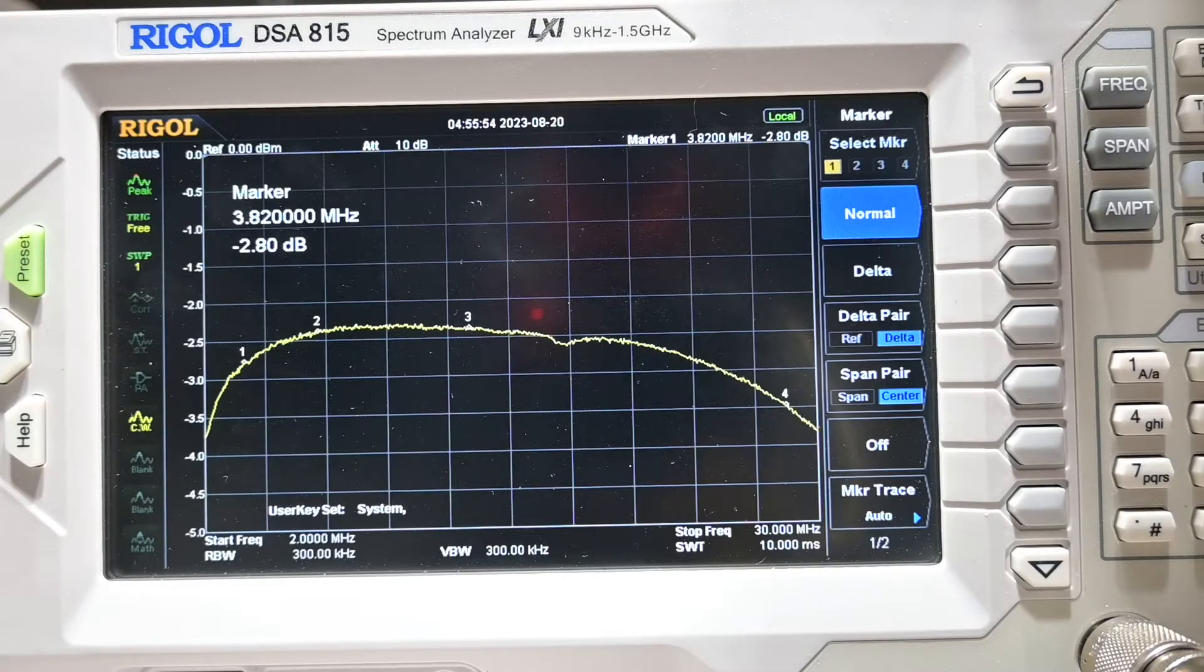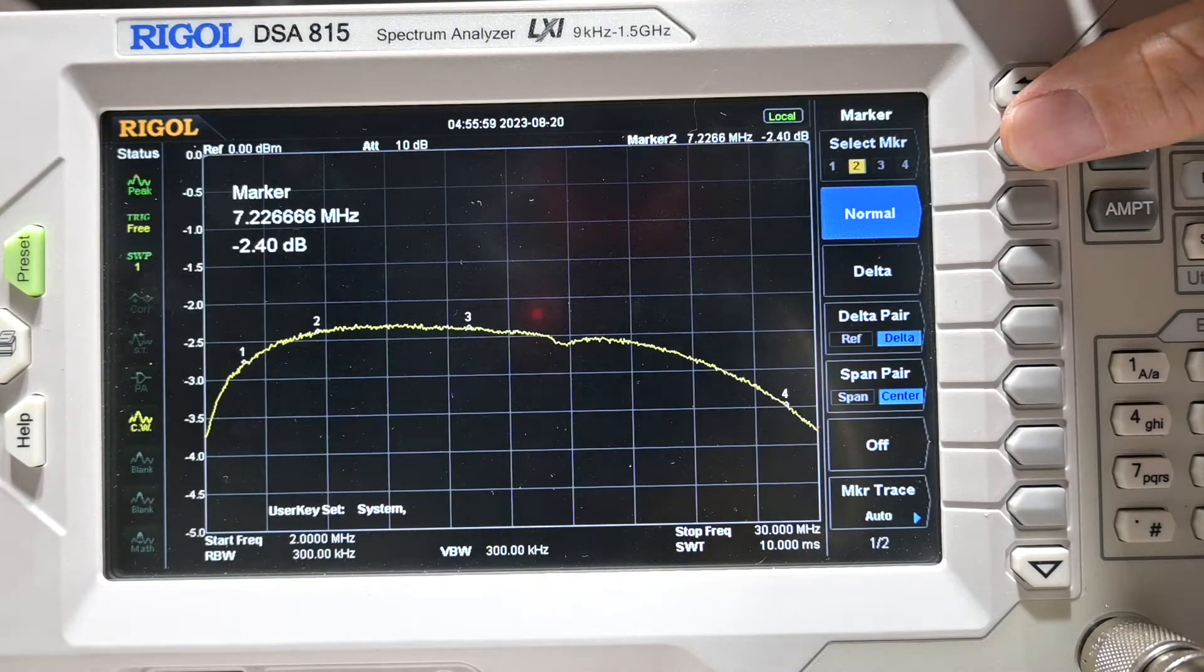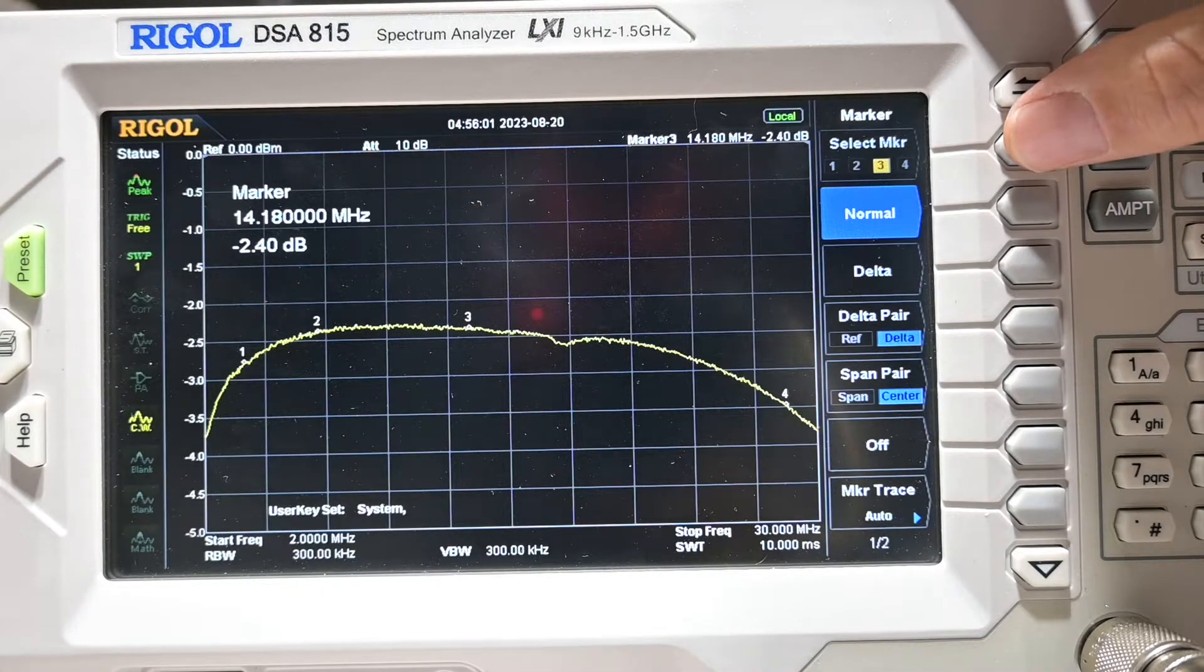And we're looking at 1.4 dB per device at 80, 1.2 dB per device at 40, 1.2 dB per device at 20, and 1.7, 1.75 dB at 10 meters.